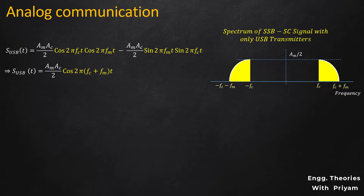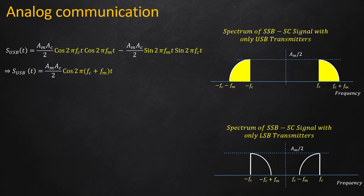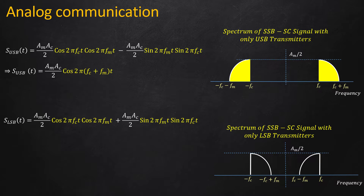Similarly, the lower sideband SSBSC modulated signal can be shown. Its equation is: s(t) = (Am × Ac / 2) × cos(2π·fc·t) × cos(2π·fm·t) + (Am × Ac / 2) × sin(2π·fm·t) × sin(2π·fc·t). Taking (Am × Ac / 2) common and applying the formula cos(A−B) = cosA·cosB + sinA·sinB, the lower sideband SSBSC modulated signal equals (Am × Ac / 2) × cos(2π(fc − fm)t).